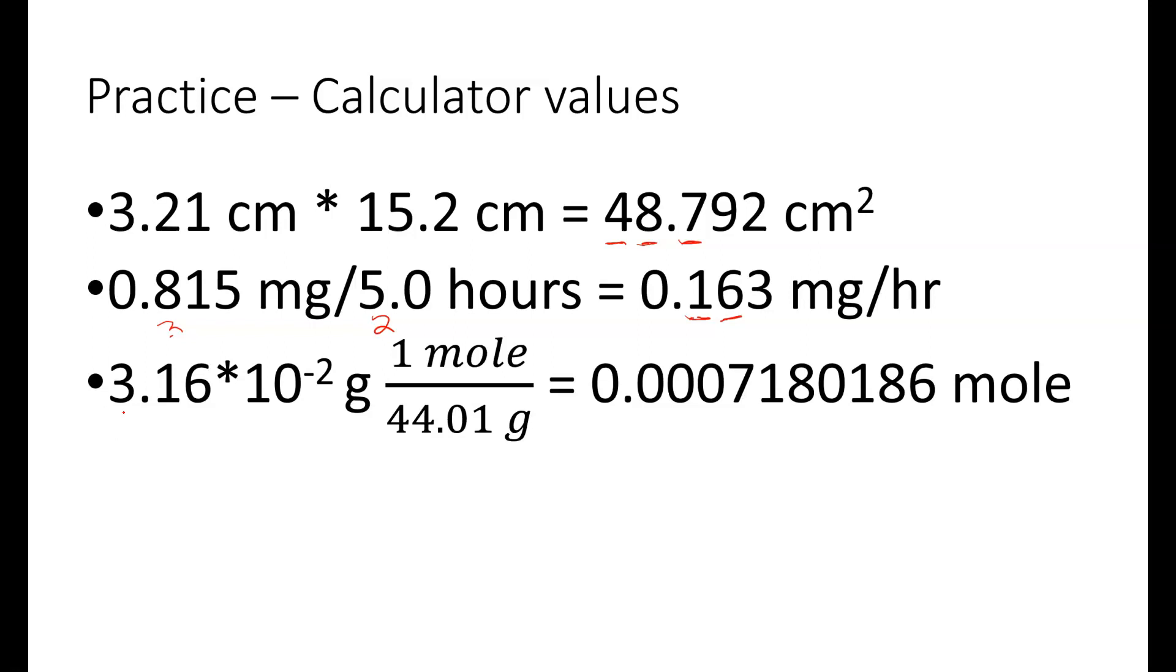The last one, we have three significant figures, three significant figures, and four significant figures. This one is an exact number. It's not going to affect our significant figures, and so we're going to have to round to three significant figures. We don't start counting until we get to the first non-zero digit, 7, 1, and 8 here.